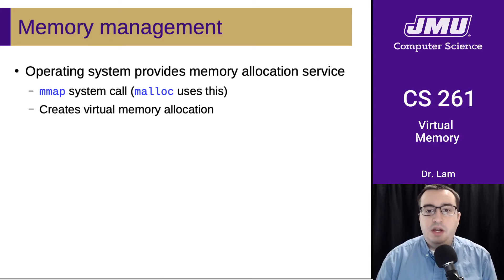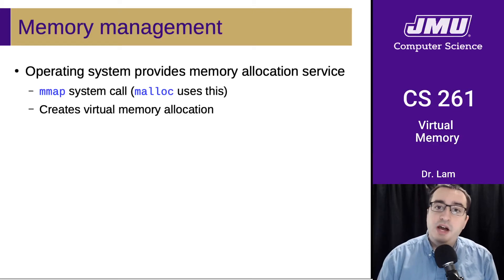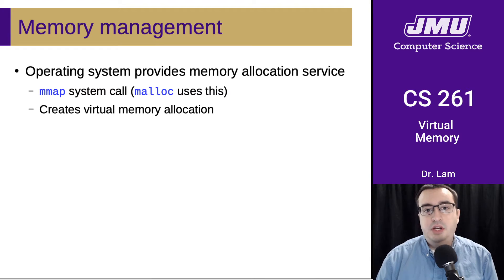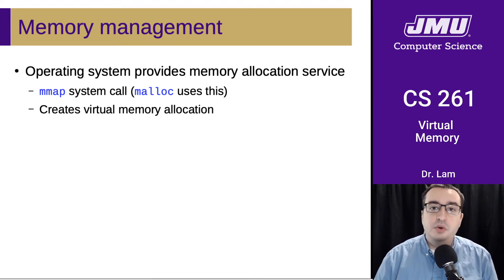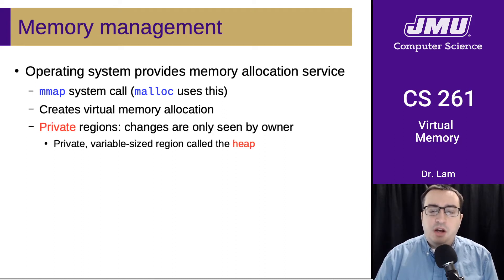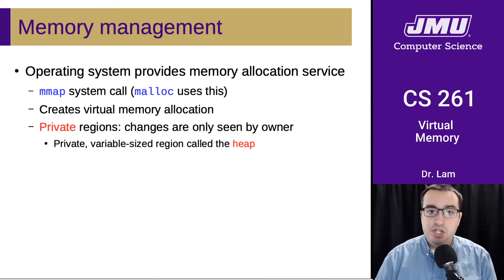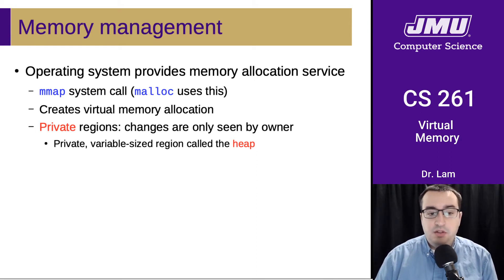When you call malloc, what's really going on under the hood is that it is creating an allocation of virtual memory for your system. There is a distinction we haven't made up to this point of private versus shared regions. Most of the memory you've worked with so far is private, and the changes are only seen by the owner, including these small variable-sized regions called the heap.